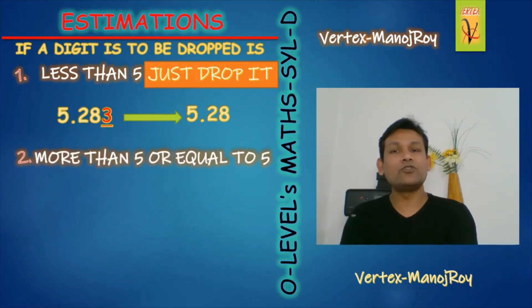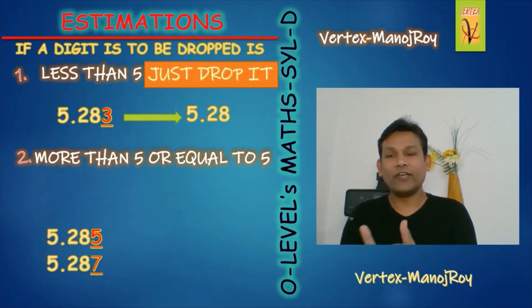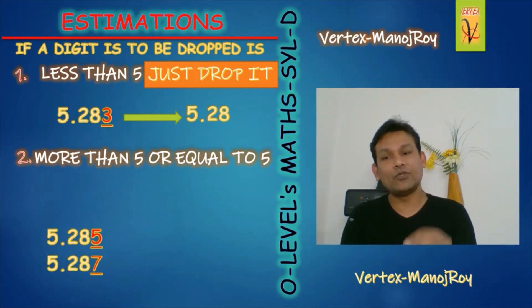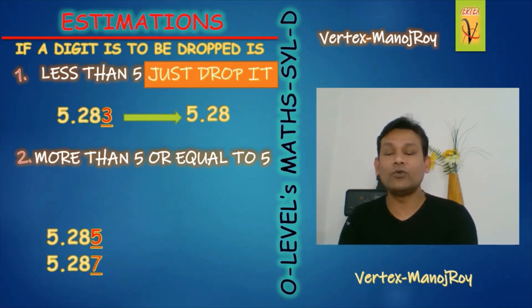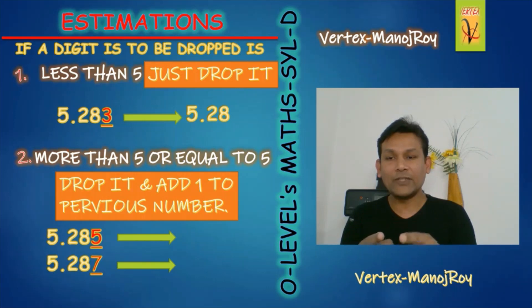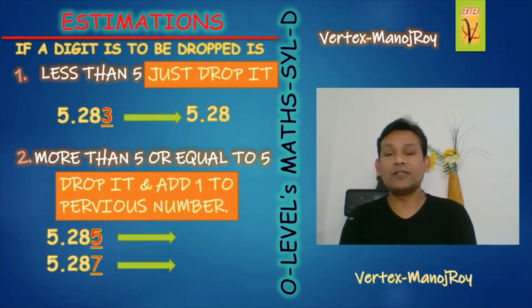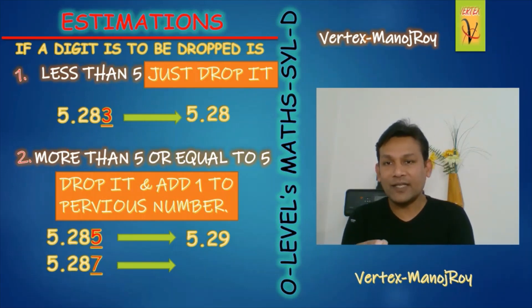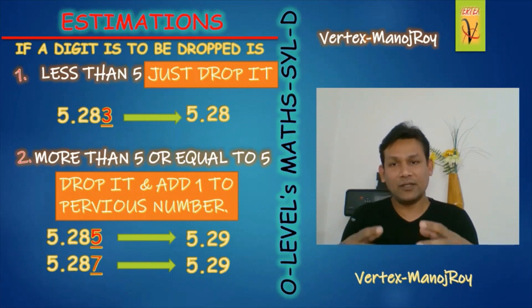Case two: if a digit to be dropped is more than five or equal to five. Example one: 5.285 — I want to drop this 5, which is equal to five. Drop it and add one to the previous number. Add one to 8, so the result is 5.29. Example two: 5.287 — I want to drop this 7, which is more than five. Drop it and add one to the previous number, also giving 5.29.